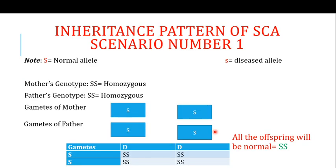When we talk about the inheritance pattern of sickle cell anemia, there are different scenarios to discuss. We will use capital S for the normal allele and small s for the diseased allele. Capital S means the beta globin chain is normal, and small s means the beta globin chain is mutated — that is, glutamic acid has been replaced by valine — whereas capital S has glutamic acid at position number six.